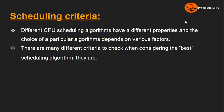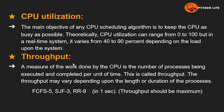Welcome to Python Life YouTube channel. This video covers CPU scheduling criteria. There are different types of CPU scheduling algorithms, and the choice of a particular algorithm depends on various factors. Different CPU scheduling algorithms have different properties, and there are many different criteria to check when considering the best scheduling algorithm.